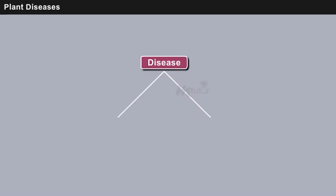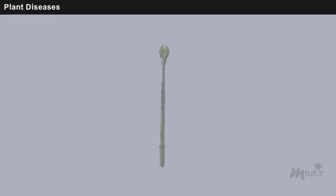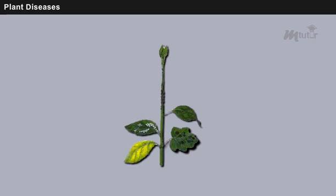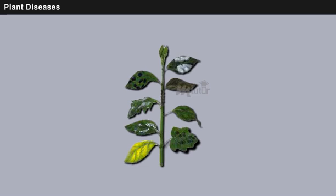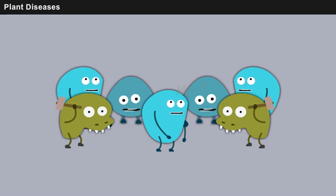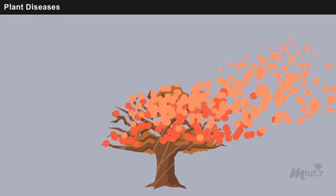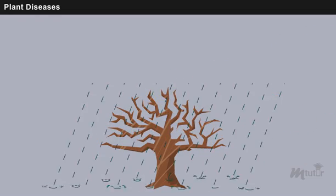The word disease comprises two terms, namely dis and ease, meaning uneasiness. Plant disease is an abnormality in the structure and function of a plant that results due to continuous irritation caused by a pathogenic agent or an environmental factor. Let us now discuss the terms related to plant diseases.